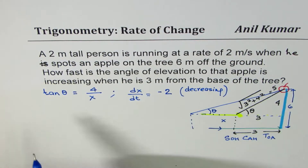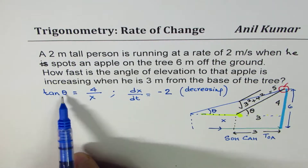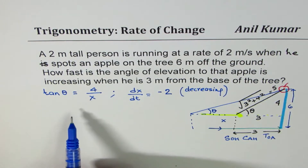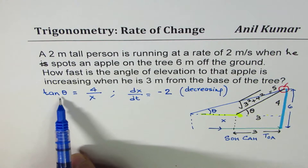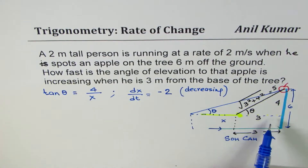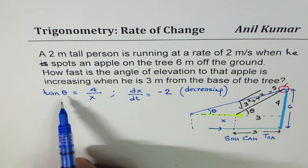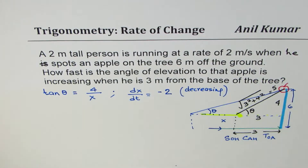So the function is tan θ = 4 over x. We are relating θ with x, but in this case, we know time is the independent variable. So we need to differentiate this function with respect to time. Some of you may know the derivative of tan θ, which is secant squared θ.